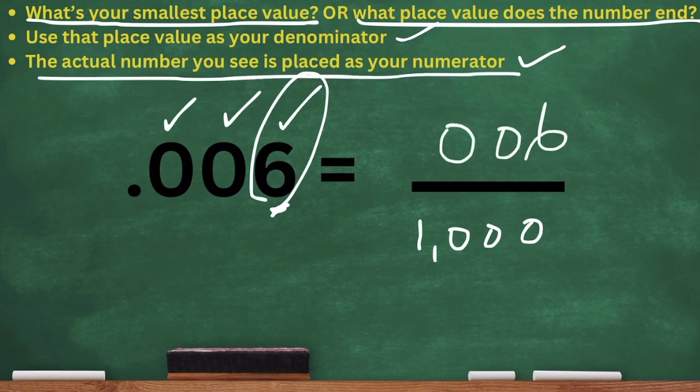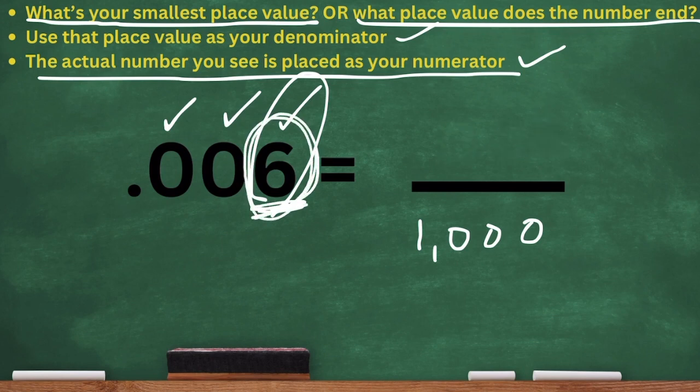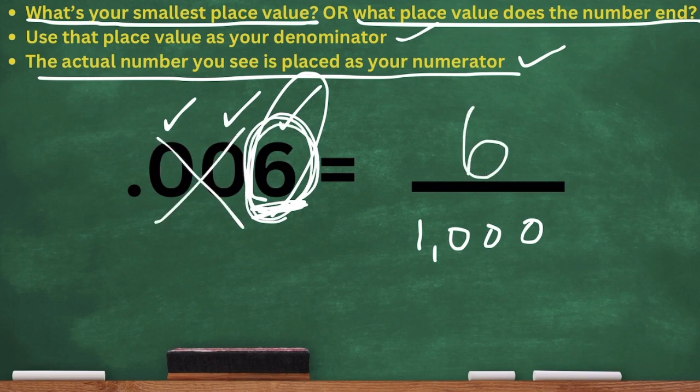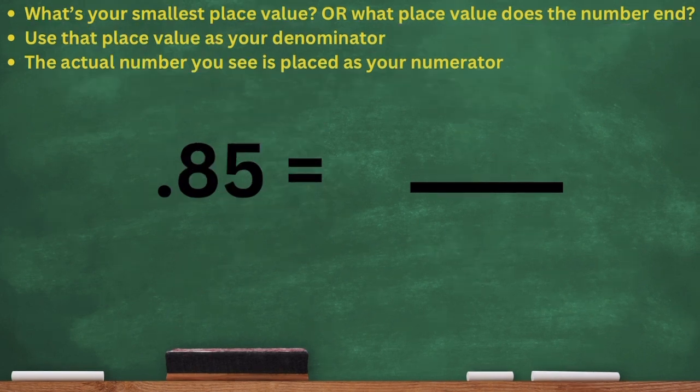And then it says take the actual number and place it as your numerator. I'm not going to put 006. I'm just going to take the six by itself. Pretend like those zeros are not there, and I'm going to put that six as my numerator. And that's how I converted our decimal number into a fraction.